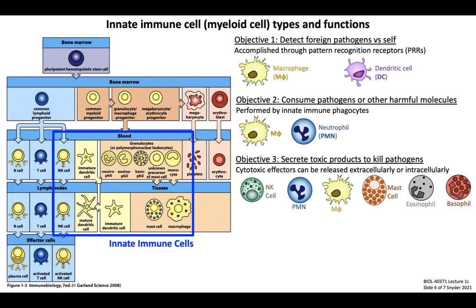Objective number three is to secrete toxic products that kill pathogens. Numerous innate immune cells produce cytotoxic effector molecules, which can be released either extracellularly or intracellularly into specialized organelles called phagolysosomes used by professional phagocytes. NK cells, neutrophils, and macrophages all generate and release cytotoxic molecules, as well as mast cells, eosinophils, and basophils.